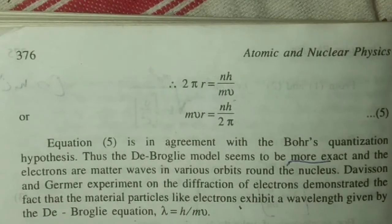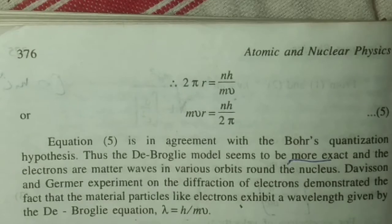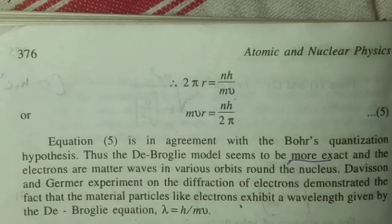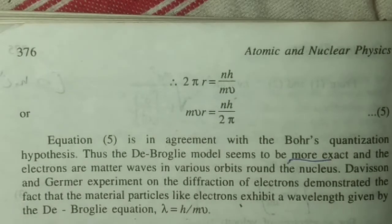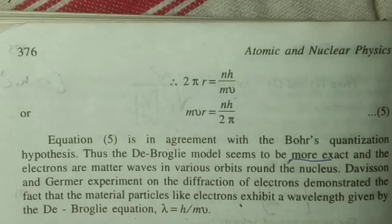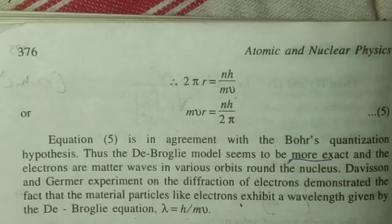The Davisson and Germer experiment was a famous experiment to show the electron has wave nature. This experiment we will discuss later. So this is all about for today. Thanks for watching the video, thank you.